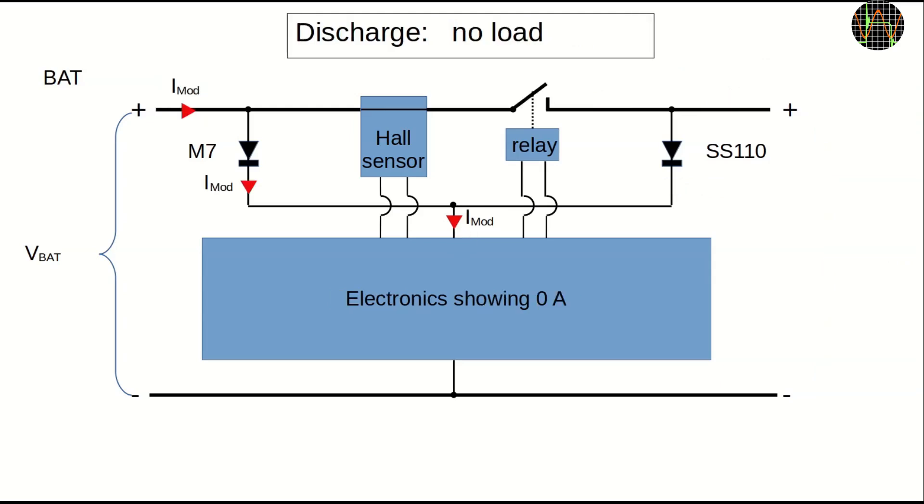When discharging, consider first the case that just the battery is connected without a load and the relay is open. In this case, the module's operating current flows through M7 but no current flows through the current sensor because of the open switch. The module shows zero current even though the battery is actually discharging, so if you keep this going for a long time, you will end up with a discharged battery even though the module will think it is still full. If the relay switch is closed, things change. Now the SS110 diode is available as a better path for the module current, so the current flow through M7 stops and instead goes through the current sensor to SS110 and from there into the module.